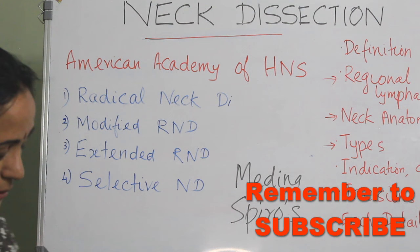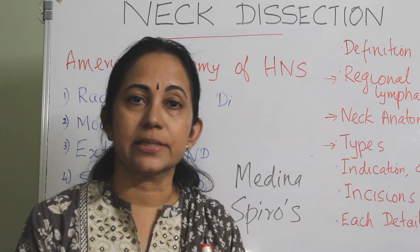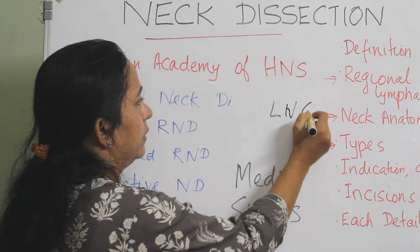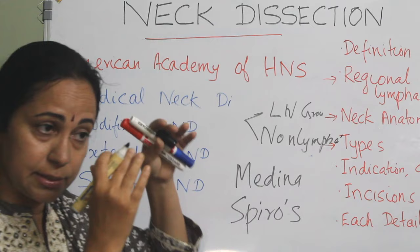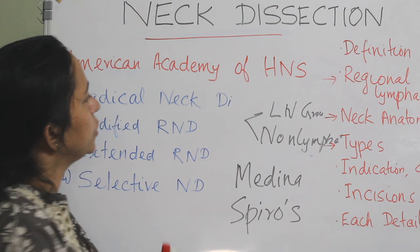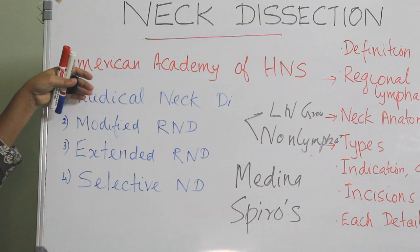According to that classification, we can divide neck dissection into radical neck dissection, which is the classical one. In radical neck dissection, we divide two groups: one is the lymph nodal group and another is the non-lymphatic group. Radical neck dissection is the classical format and serves as the baseline upon which all other types are based.